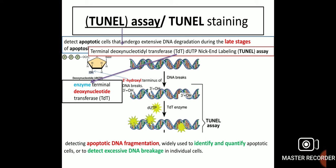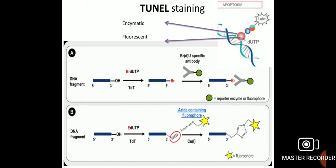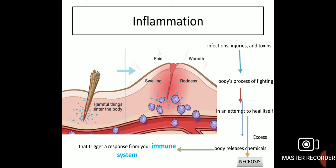Detection can be done by two labeling methods: enzymatic labeling, using bromodeoxyuridine (BrdU), or fluorescent labeling using nucleotides containing fluorophores. So far we have seen how apoptosis can be quantified and what its characteristics are; now we will move toward necrosis.